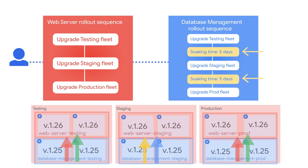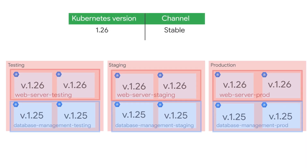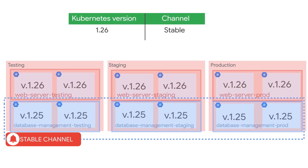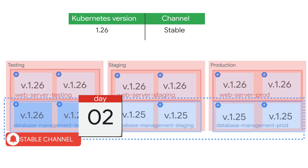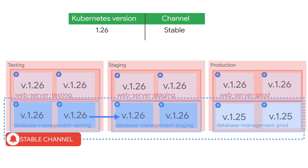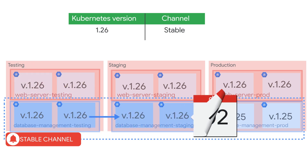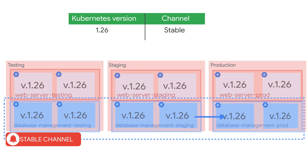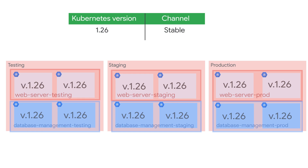Now let's assume version 1.26 is available in the stable channel. GKE will upgrade the database management team's clusters in the testing fleet first. Then the soaking time of five days begins. When this is complete, GKE upgrades the clusters in the staging fleet, and after another soaking period of five days, upgrades the clusters in the production fleet.